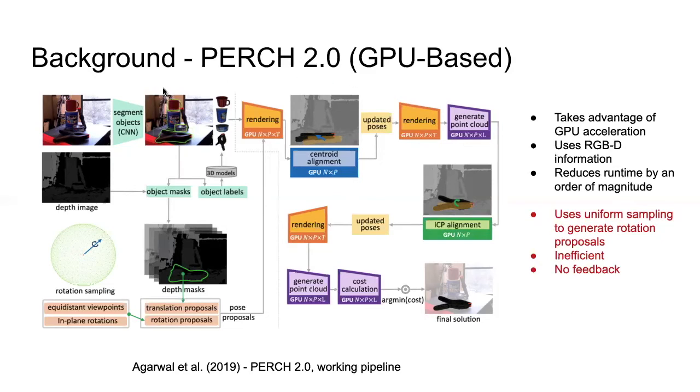The input image is passed through a standard instance segmentation network obtaining object labels and segmentation masks. Then we generate six-DOF pose proposals for the detected objects through parallel rendering of each pose proposal on GPU. With the help of GPU acceleration, the search runtime can be reduced by an order of magnitude.